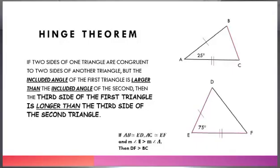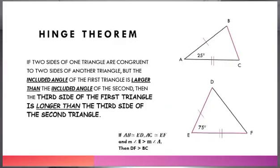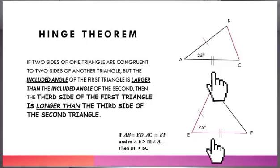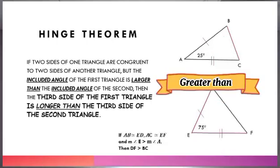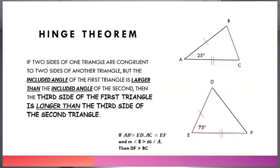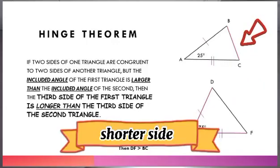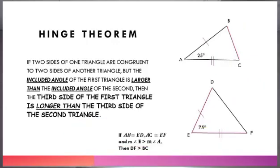Here in this figure, we have AB is congruent to ED and AC is congruent to EF, and measure of angle E is greater than measure of angle A. The longer side is DF and the shorter side is BC, so DF is greater than BC.